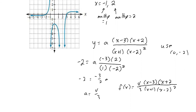That brings us to the end of this section. There are lots of moving parts here, so go back and particularly check out the last two questions, which have all of those pieces working together. If you have issues with horizontal asymptotes, vertical asymptotes, or removable discontinuities, look at an example with only one of those concepts.